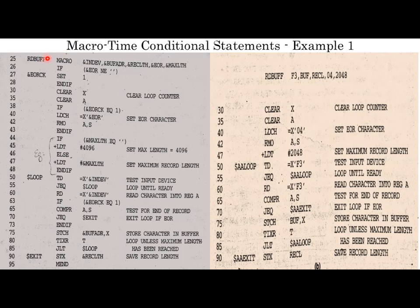Here I have a macro invocation: rd buff f3, buff, recl, 42048. The condition is: if ampersand EOR is not equal to null. EOR here is 4, so it is not equal to null. EORCK is a macro time variable initialized as 1. This condition is true, so EORCK is set as 1 by the endif. Then 'clear x' will be copied to the expanded program.